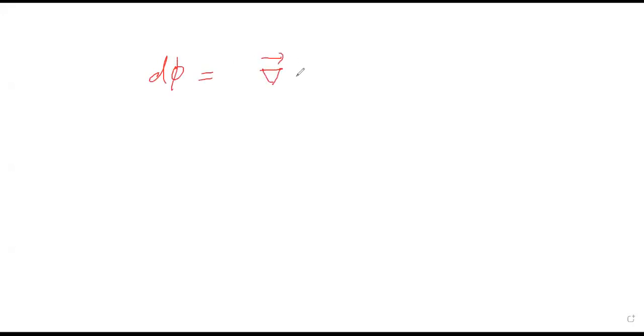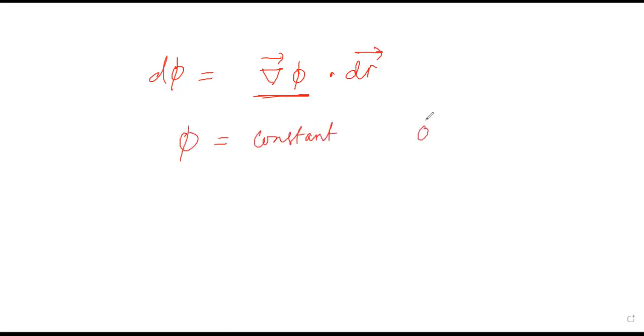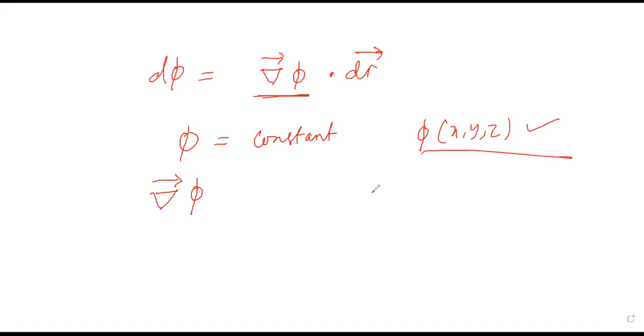Hi friends, in this video we are continuing the same topic we started in the previous video — introduction to electromagnetism — where we discussed finding the gradient of a scalar and its physical significance. We discussed that dφ equals ∇φ dot dr, and that if φ is constant, the vector perpendicular to that constant surface is given by ∇φ. Let us do a few numericals based on this.